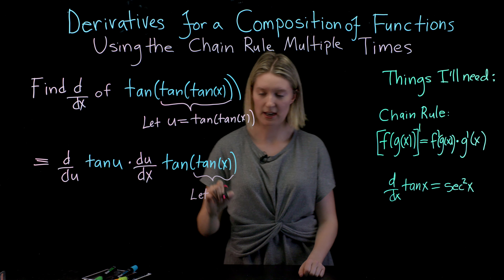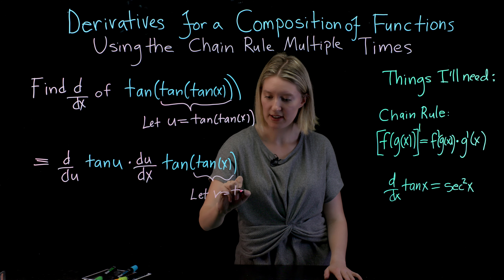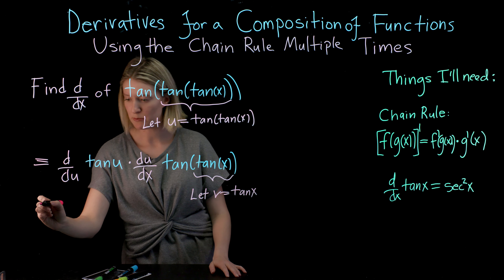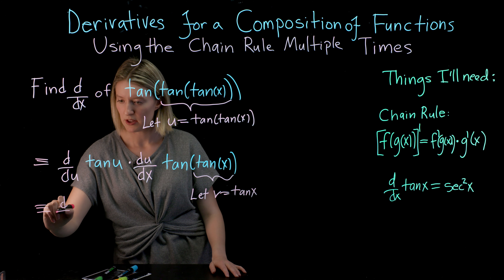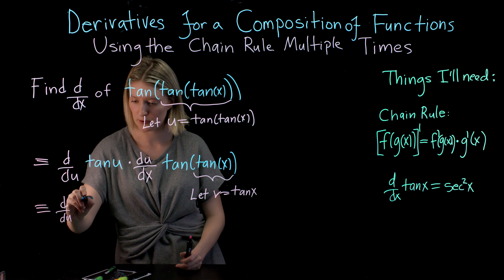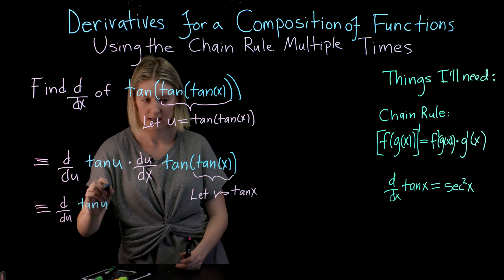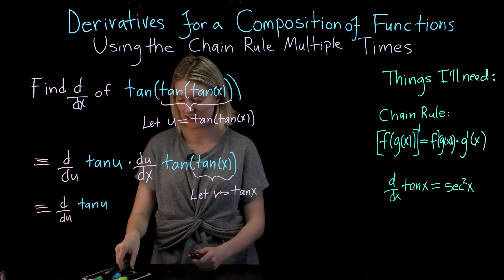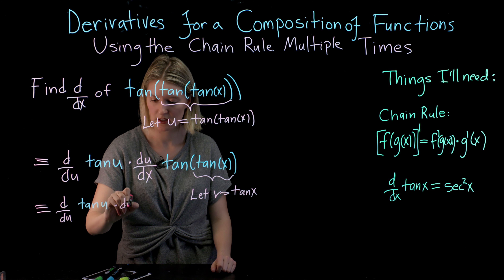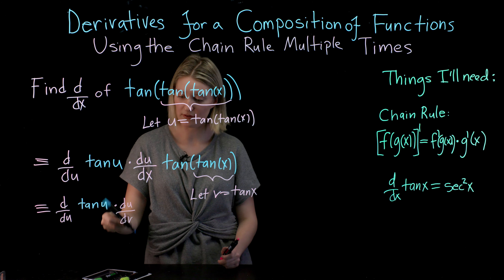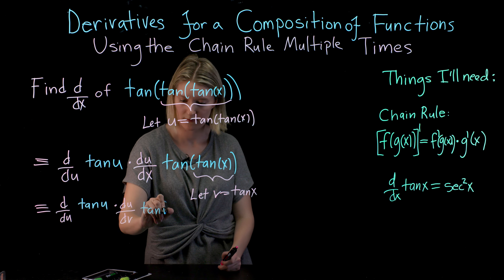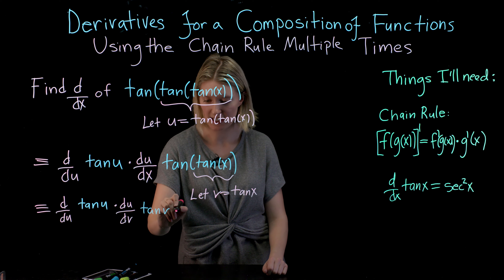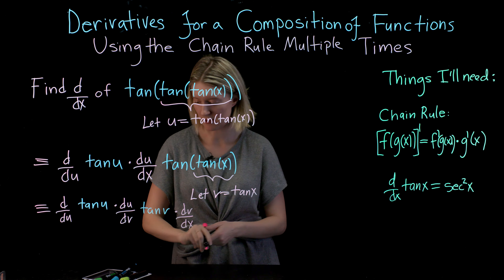I'm going to use a different placeholder this time and say: let v equal tangent of x. When rewriting my derivative, I'll keep everything the same up to the end. I'm going to have the derivative with respect to u of tangent of u, then — because I'm replacing tangent of x with v — I'll be taking the derivative with respect to v of tangent of v, and then taking the derivative of v with respect to x of tangent of x.